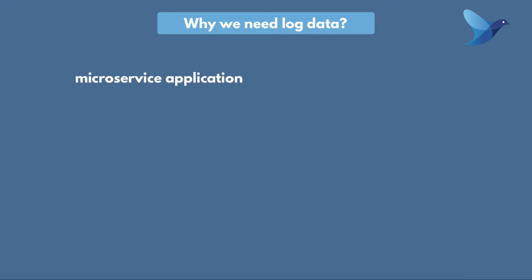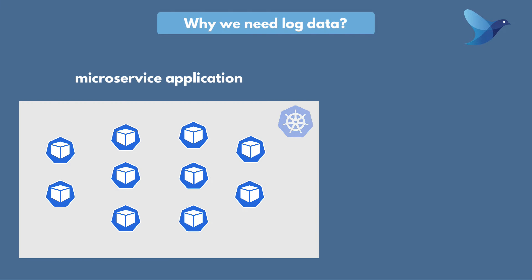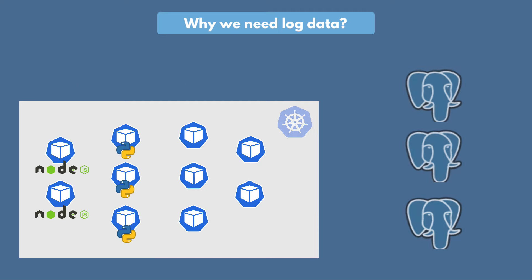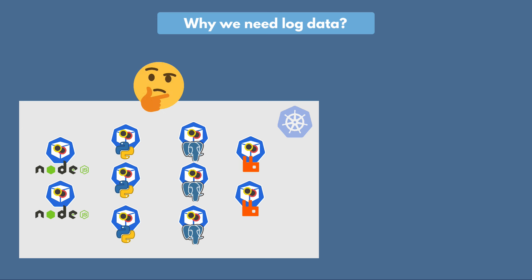Let's say we have a microservices application deployed in a Kubernetes cluster — two applications in Node.js, a couple of Python applications, maybe databases, a message broker and other services. All these applications talk to each other and produce log data. So each of these services is logging information about what the application is doing.